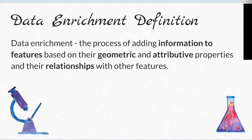Let's talk about data enrichment. Data enrichment is the process of adding information to features based on their geometric and attributive properties and their relationships with other features. Basically, we'd like to let features know something about themselves — whether they are big or small, roundish or elongated — and introduce them to their neighbors, whether they are close to or touching other features.